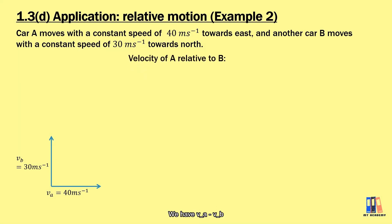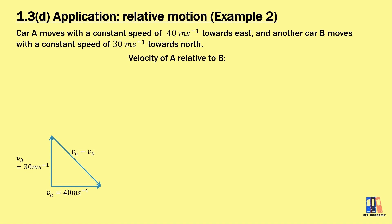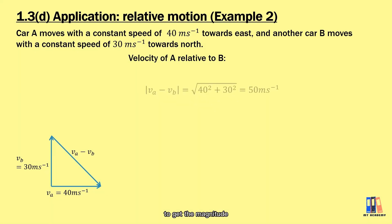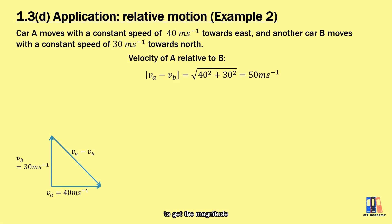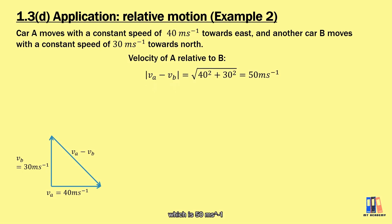We have V_A minus V_B, which gives the direction as shown in the slide. Since this is a right-angle triangle, to get the magnitude we apply the Pythagorean theorem to obtain the value, which is 50 meters per second.